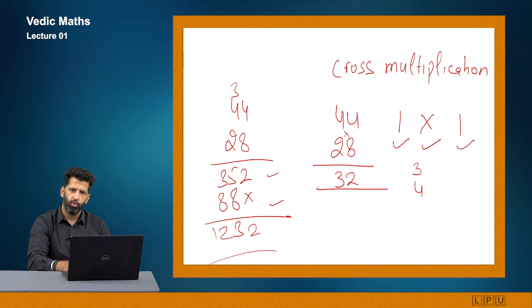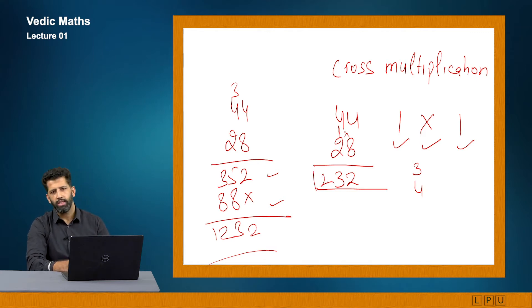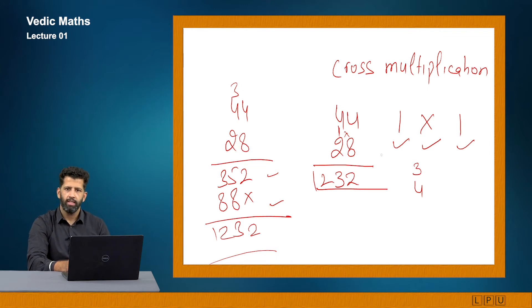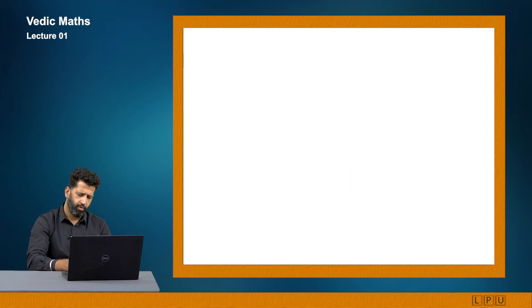In the last step, I multiply 4 with 2. 4 into 2 gives me 8, and 8 plus 4 carry forward gives 12. So I can do the same calculation in one line only, and once you practice it well, this will take a lot less time compared to the traditional method. Let us try one more question.